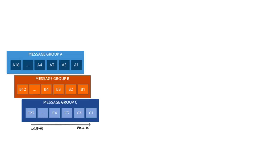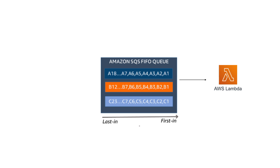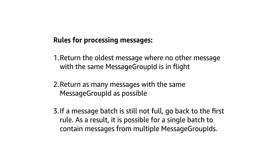But what happens if we have many more messages than the Lambda can consume in one batch and we need concurrency? Let's look at another example where we have three message groups and a total of 53 messages. Group A consists of 18 messages, group B consists of 12 messages, and group C consists of 23 messages. The batch size for the Lambda is five messages. There are three rules for processing: first, return the oldest message where no other message with the same message group is in flight; then return as many messages with the same message group ID as possible; and finally, if a batch is still not full, go back to the first rule. As a result, a single batch can contain messages from multiple message group IDs.